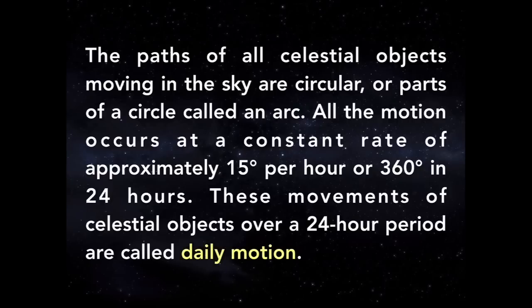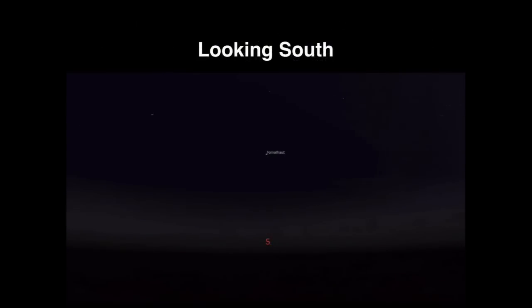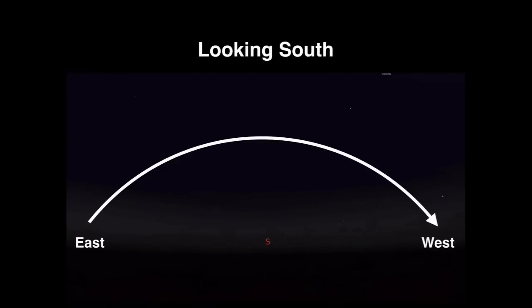These movements of celestial objects occur in a 24-hour period called daily motion. If we were to look south in the sky at night, this is the motion we would witness of stars. At a middle latitude such as ours, stars appear to move from east to west in an arc.